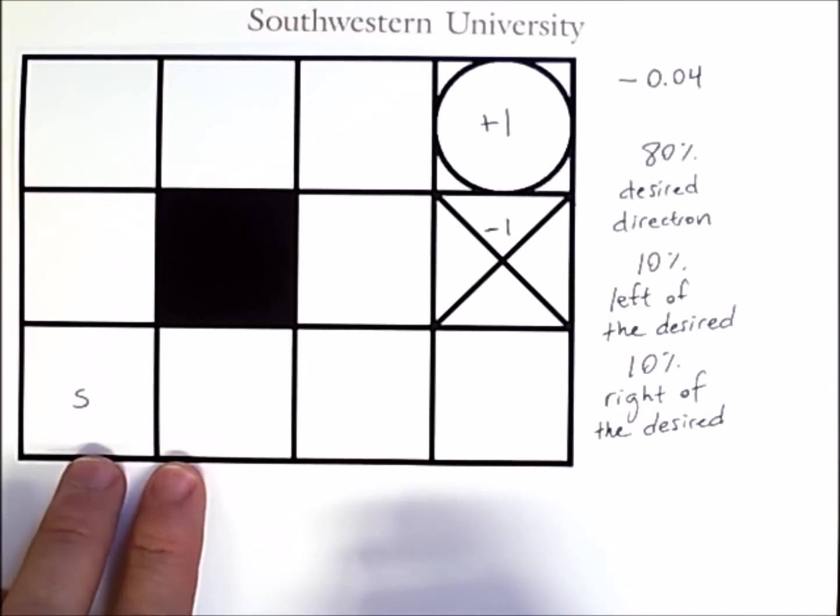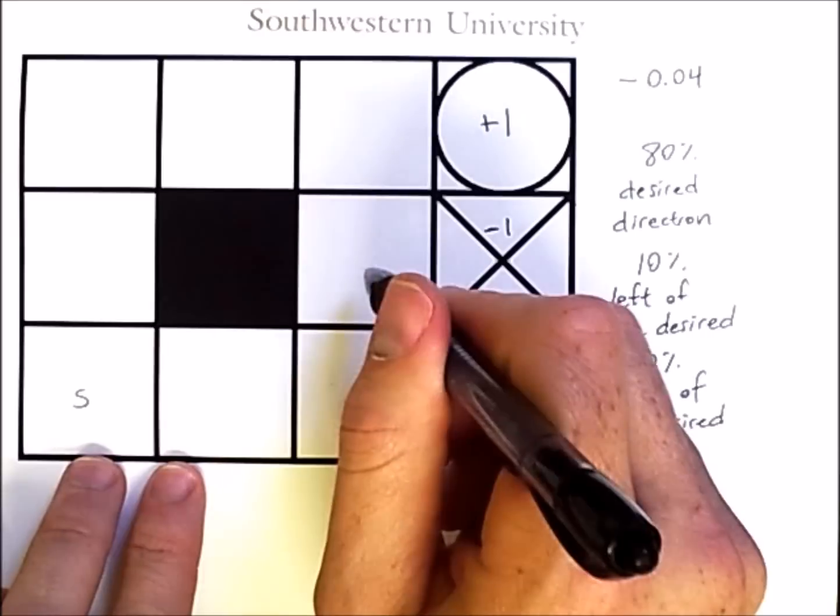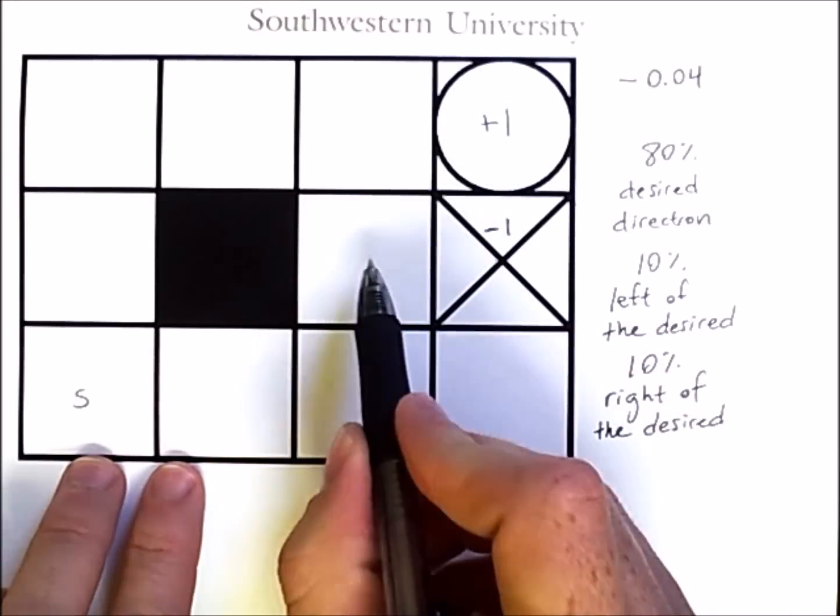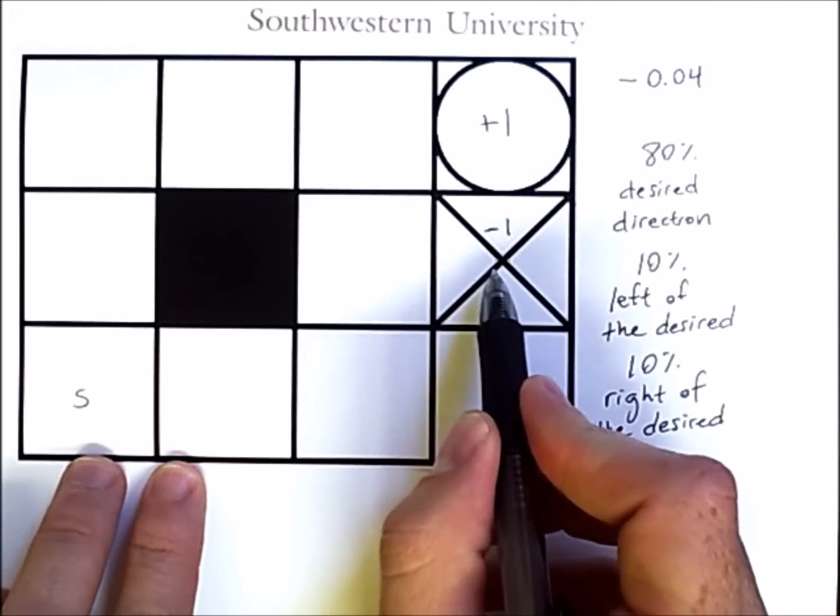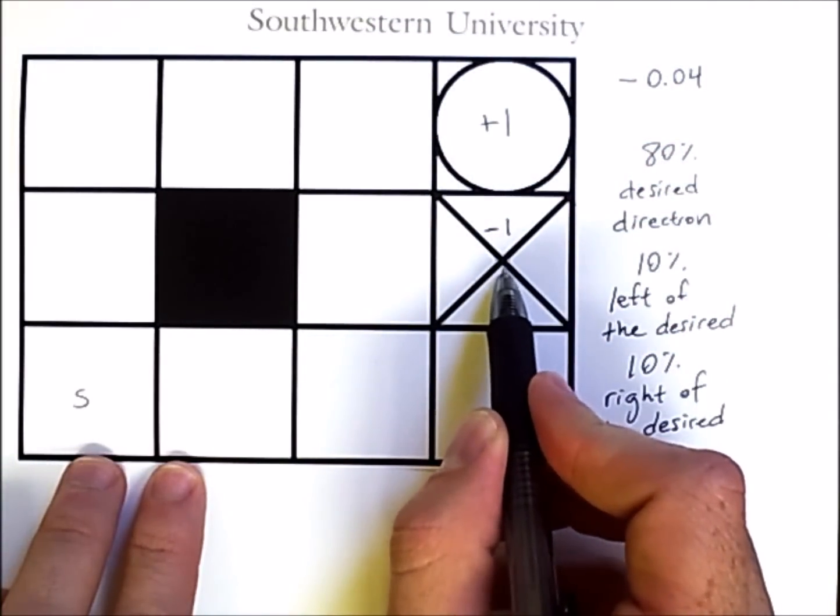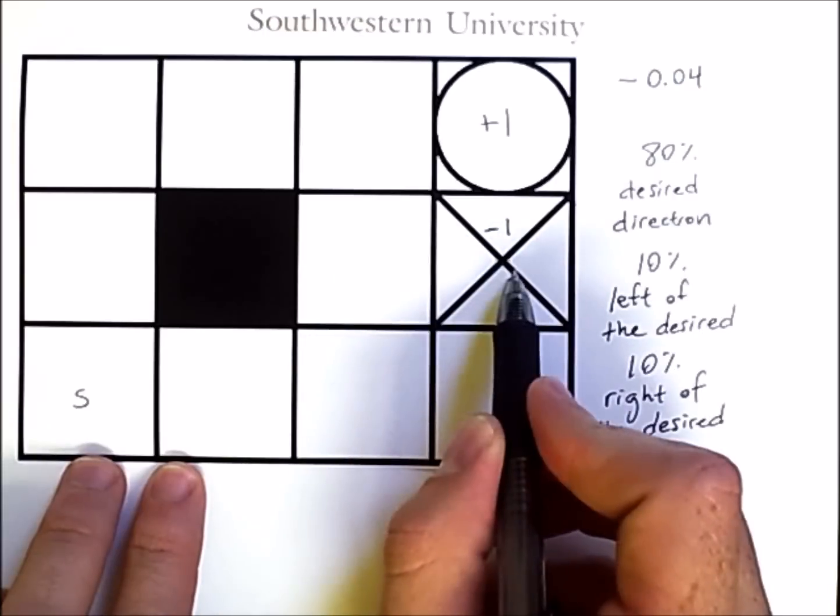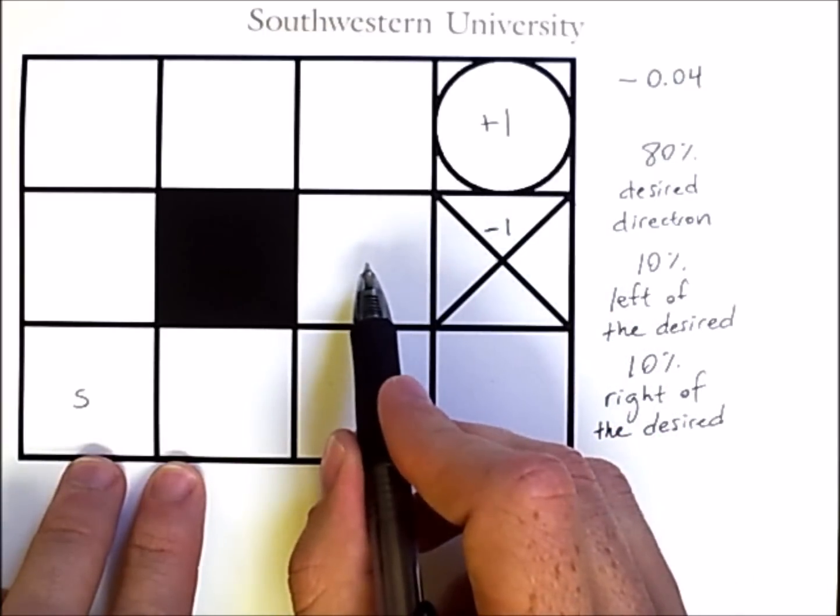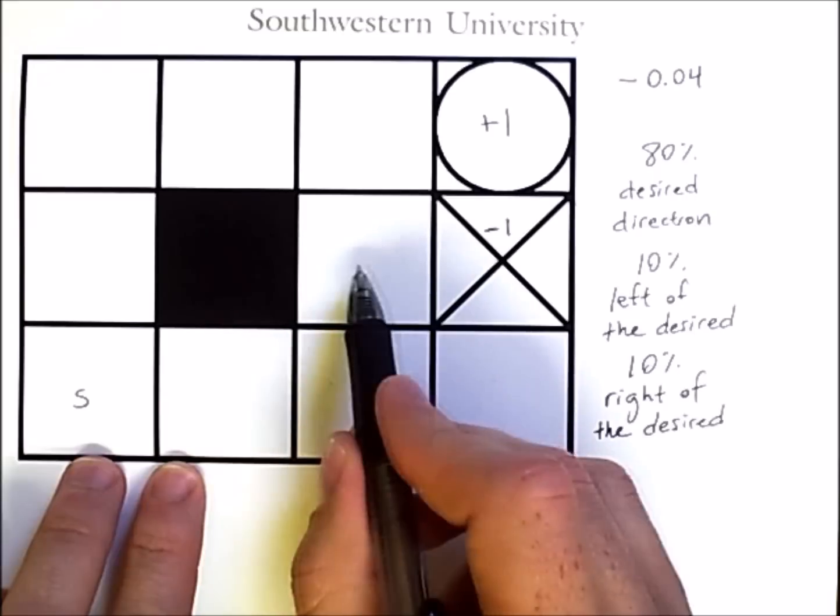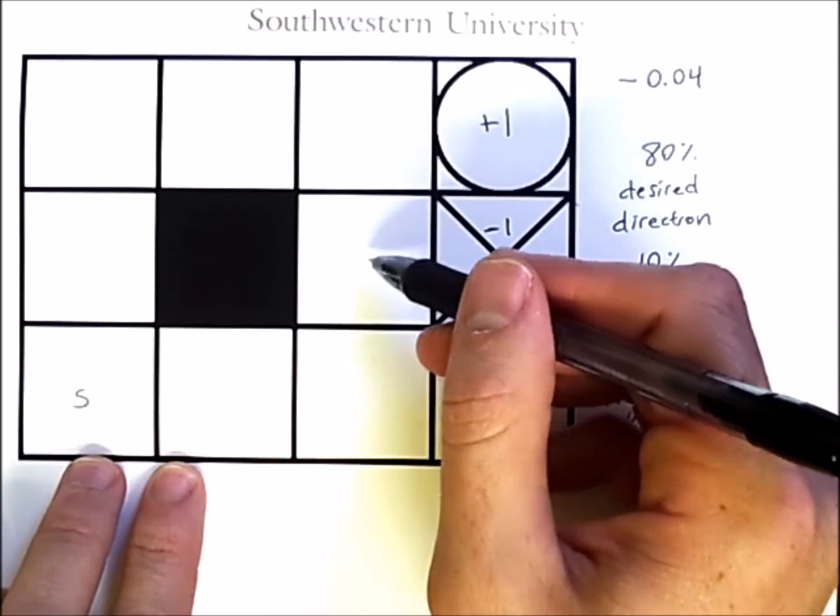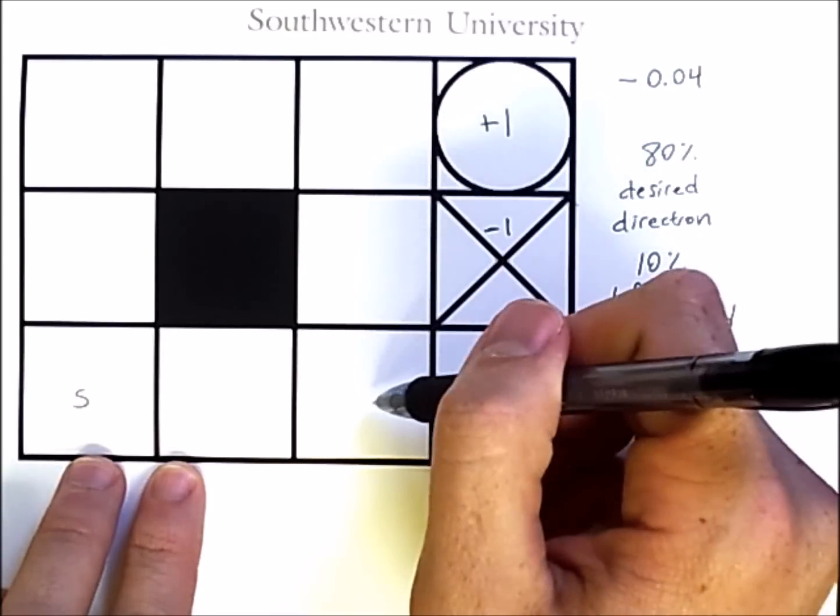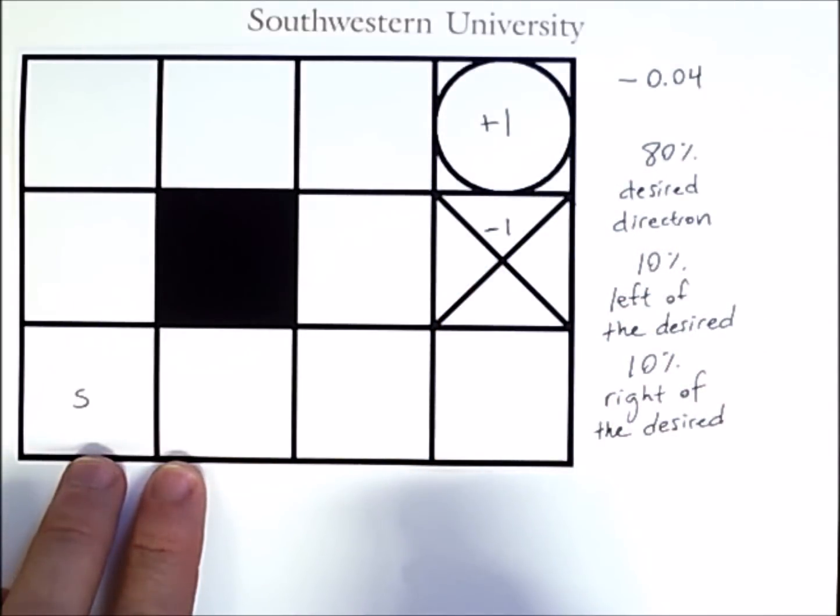So, for example, if the agent were here and chose to move up, it would go there 80% of the time, it would fall into this negative reward trap 10% of the time, and the final 10% of the time it would bounce off this wall and be stuck back in this state again. There is no case in which the agent will move in the opposite direction of the one it intends to move in.